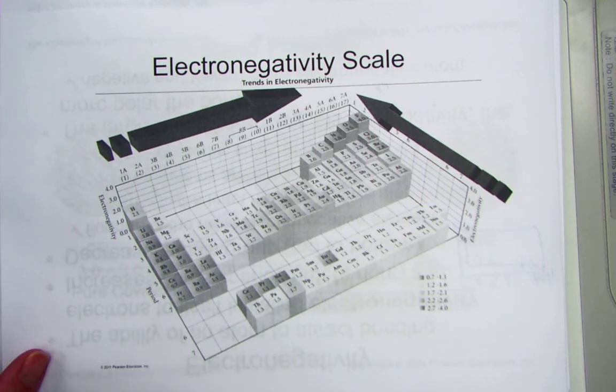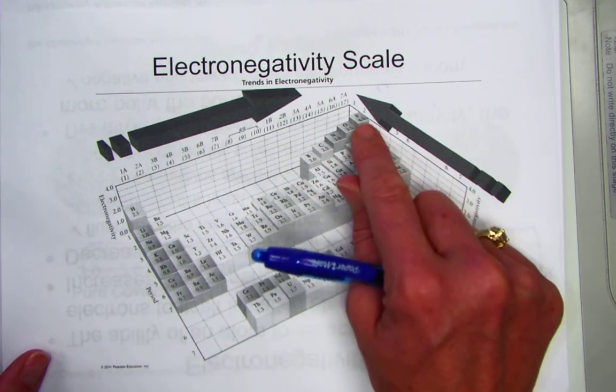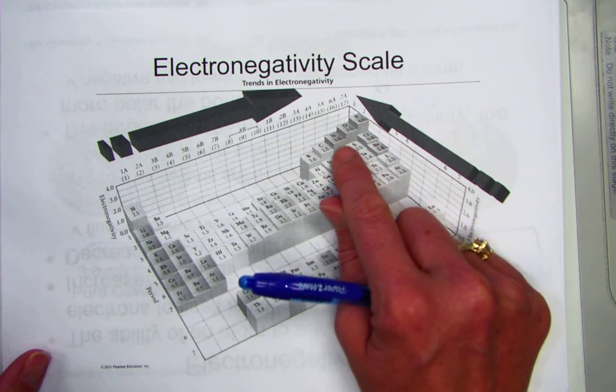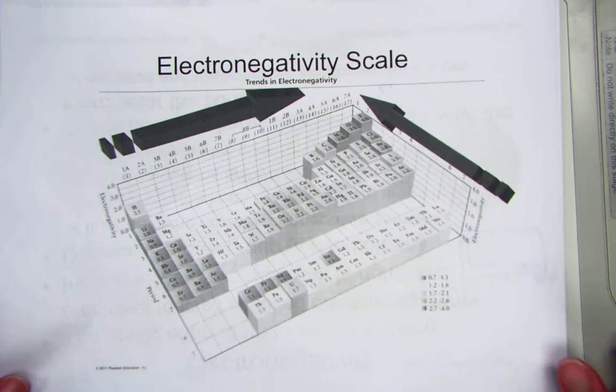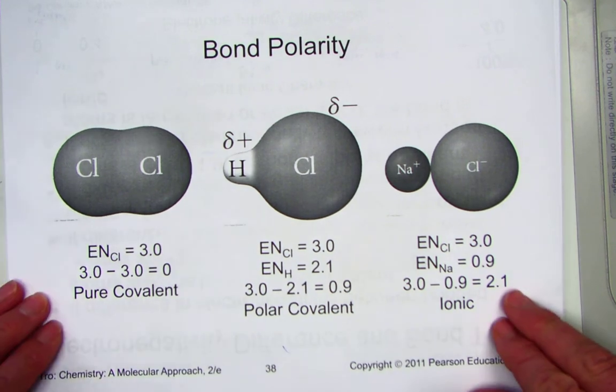I find the value in the element box and subtract the two elements that I am bonding together to find their electronegativity difference.